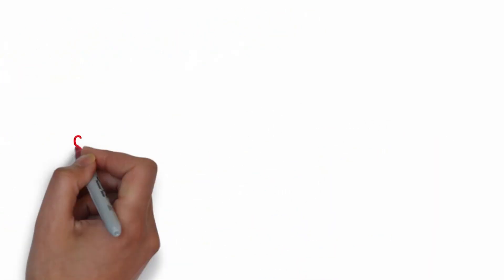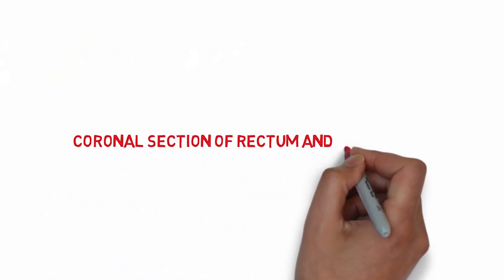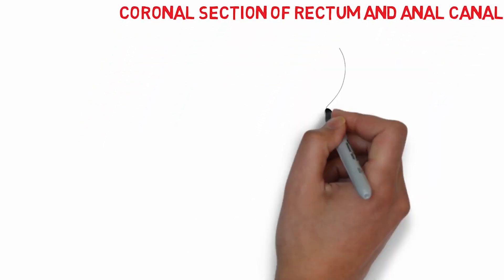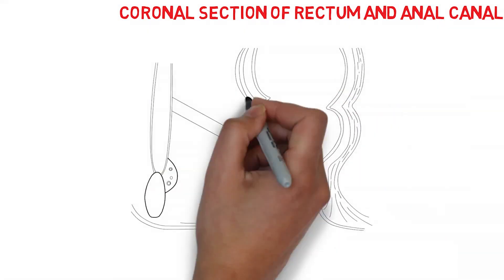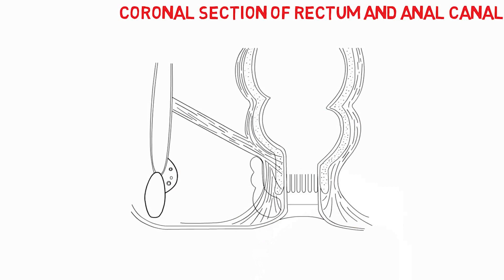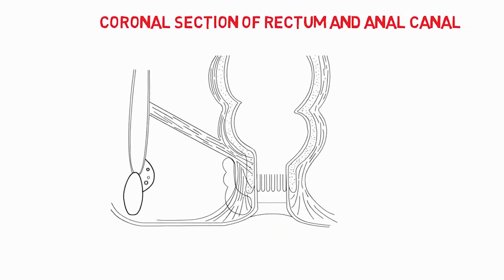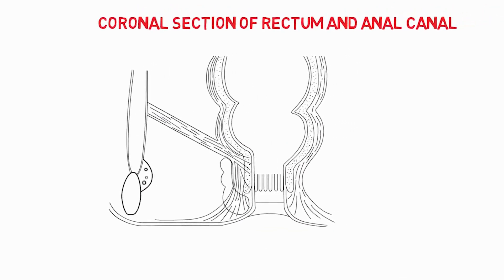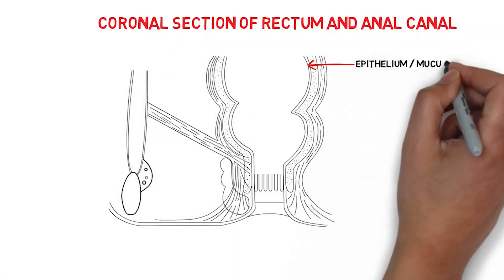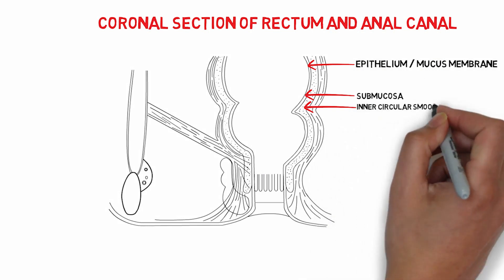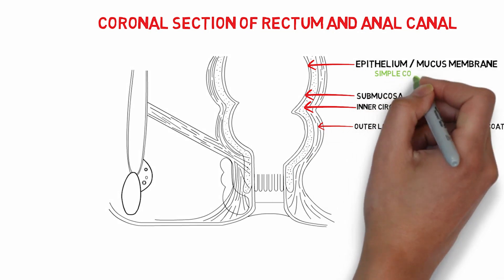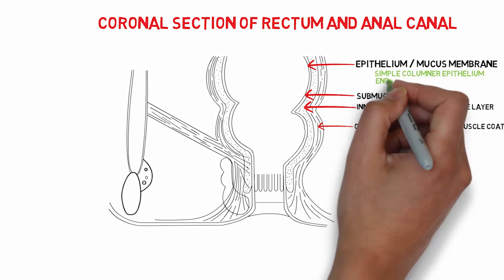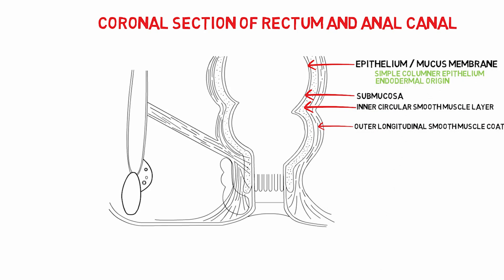Now we're going to look at a coronal section of the rectum and anal canal. The rectum and anal canal consist of almost all the typical tissue layers of the alimentary tract. From inside to outside we can see epithelium or mucous membrane, submucosa, a circular smooth muscle layer, and an outer longitudinal smooth muscle cord. The epithelium is a simple columnar epithelium with an endodermal origin, and it extends up to the upper part of the anal canal.